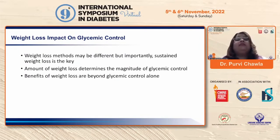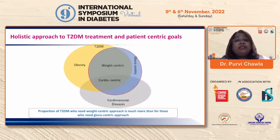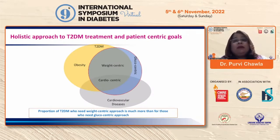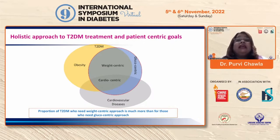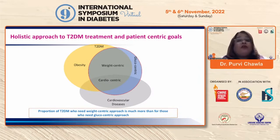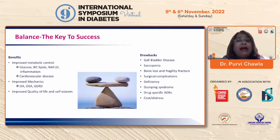Sustained weight loss is the key for those with diabetes, and the amount of weight loss determines the magnitude of glycemic control. The benefits of weight loss are far beyond glycemic control. Looking at this diagram, those requiring a weight-centric approach to diabetes far outnumber those requiring a cardiocentric or glucocentric approach.